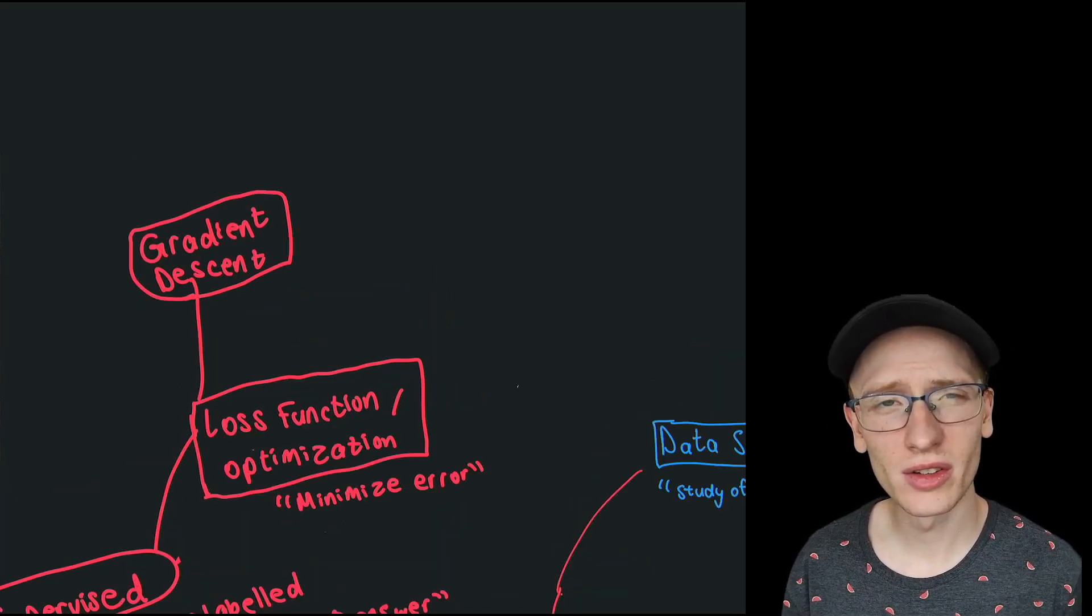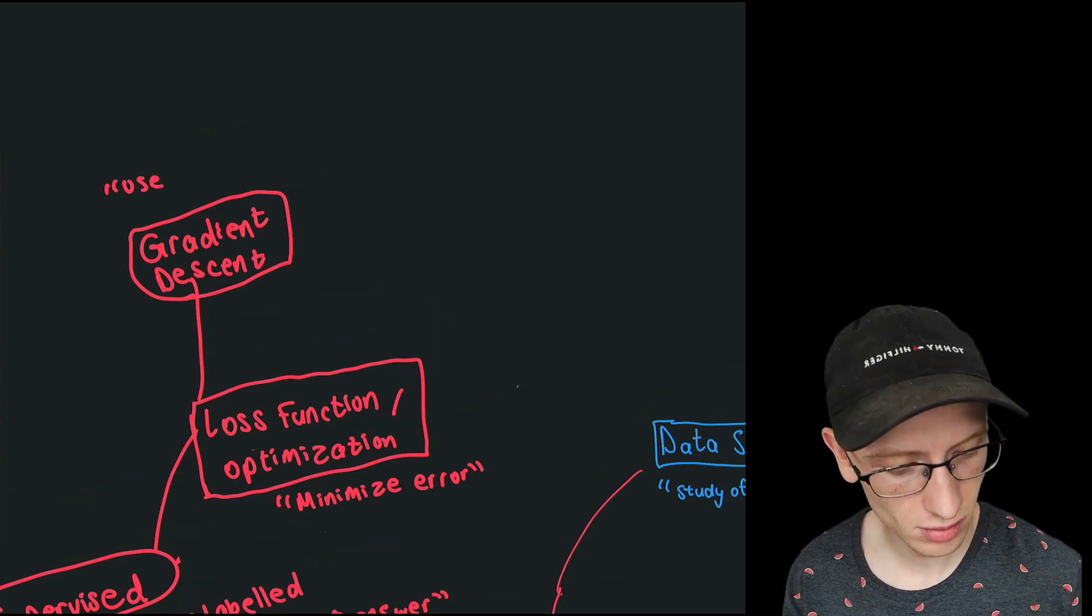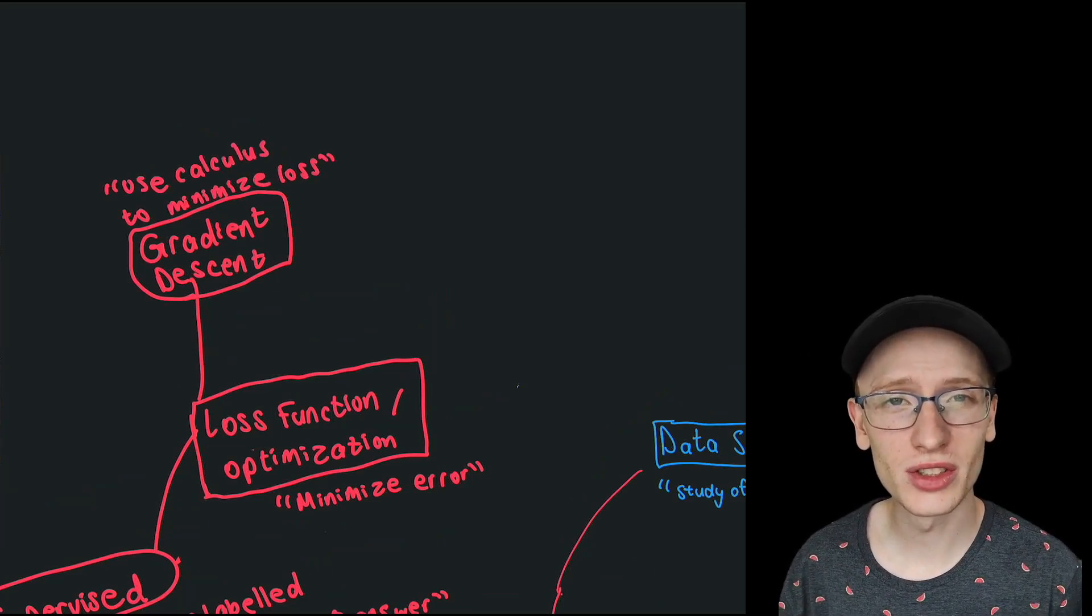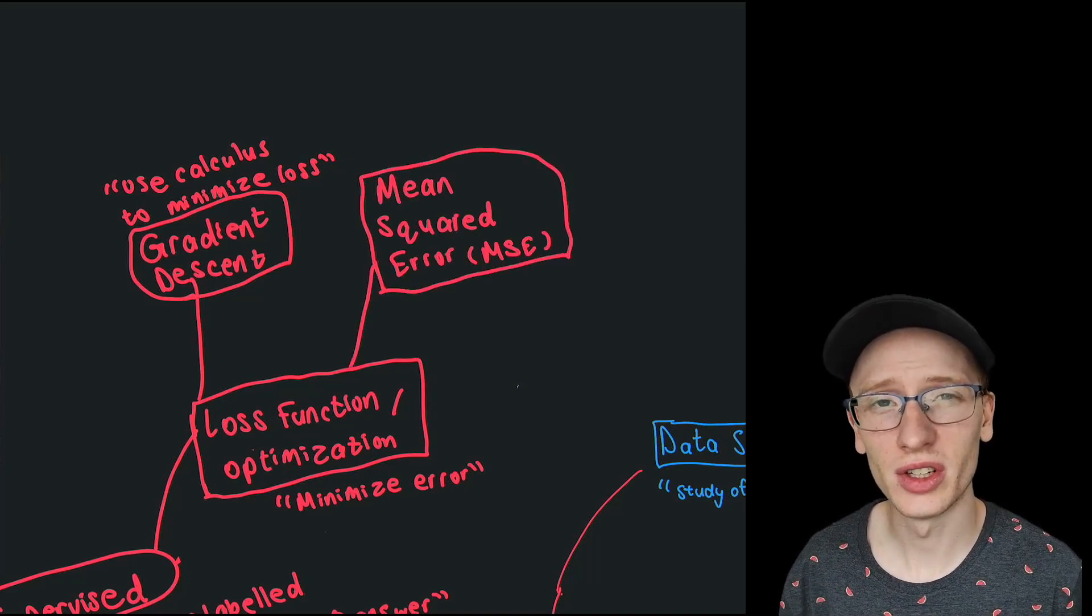Gradient descent uses calculus to calculate derivatives to iteratively minimize the loss function. The most well-known loss function is called the mean squared error. It's really just a distance metric for continuous predictions.